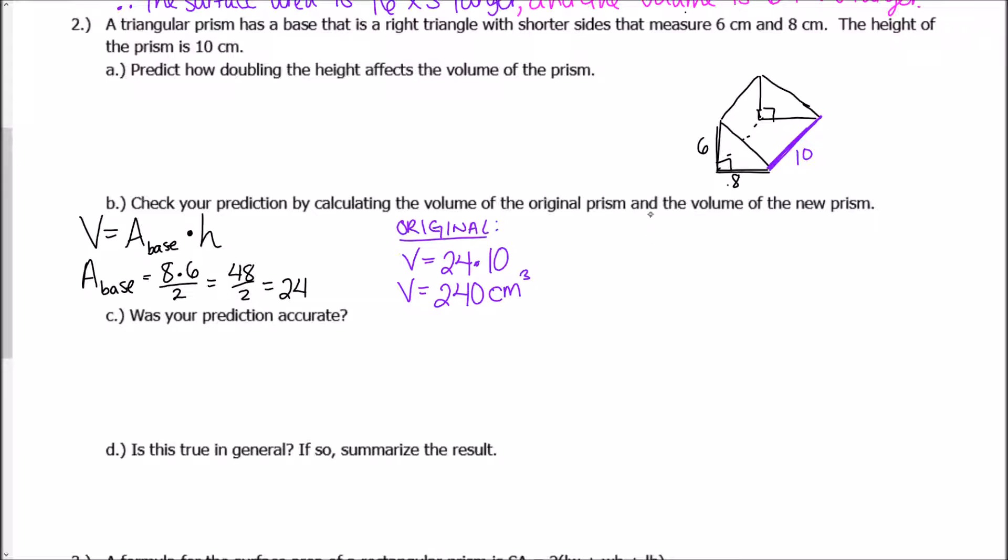Now, I want to figure out what's going to happen if I double the height. So to find the volume of the new prism, I'm still going to do the area of the base times the height. And the base, the side lengths do not change. So the area of the base is still 24.